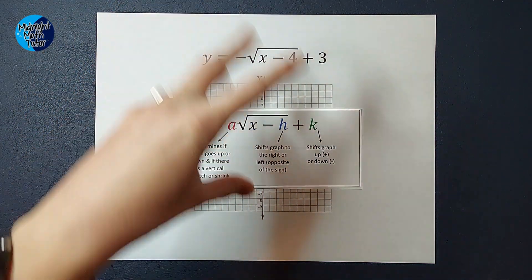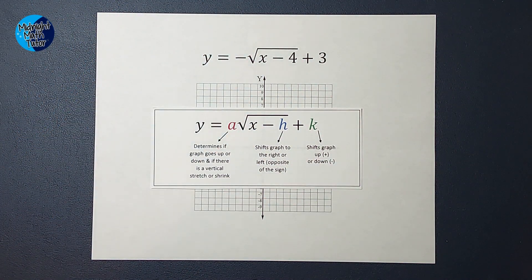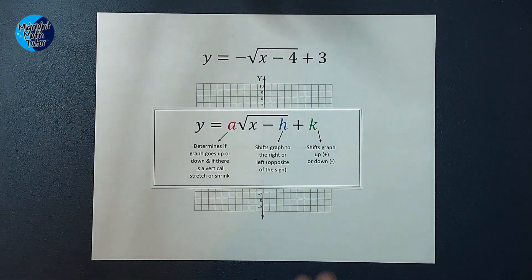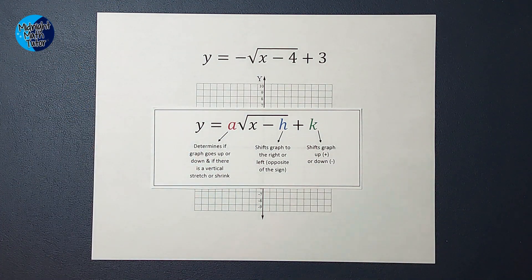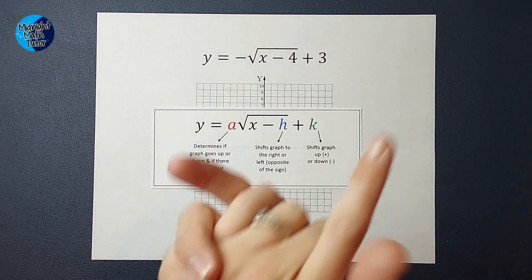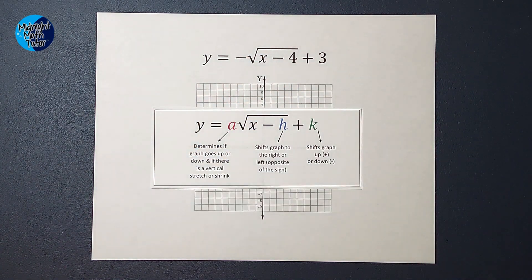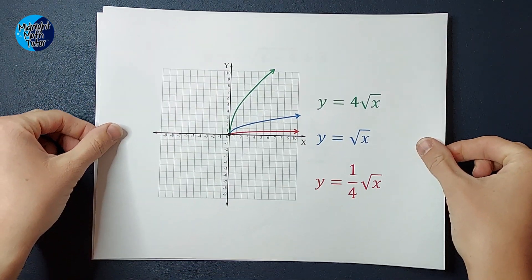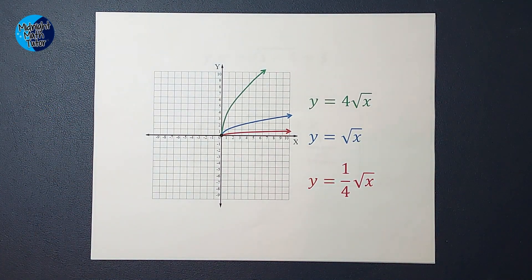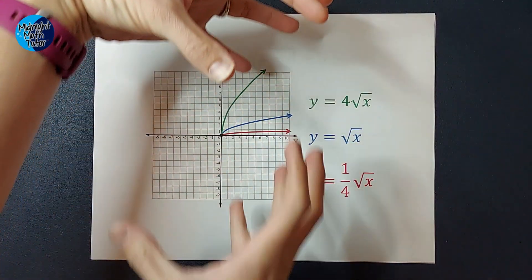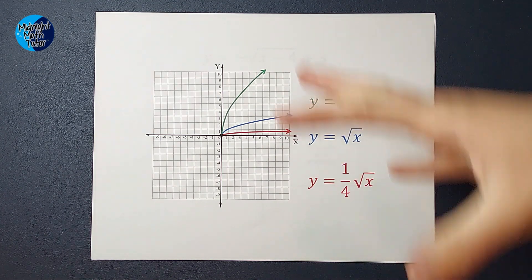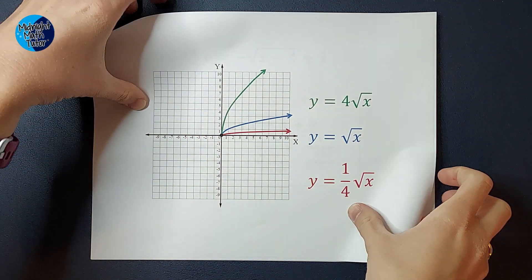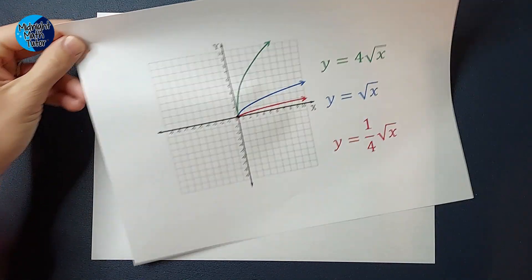A, if there is a number out front that is not 1, it can either stretch or shrink my graph, stretch it or compress it, basically. And while this doesn't apply to this problem, I will link an example where it does. I just kind of want to show you super fast how that can affect my graph. So the blue one you see, that's the parent graph I just showed you. The green you can see has a 4 out front, and you see how that graph is stretched. And then the red one has a fraction out front, 1/4, and you can see how it's compressed. So that is what a number out front can do to your graph.